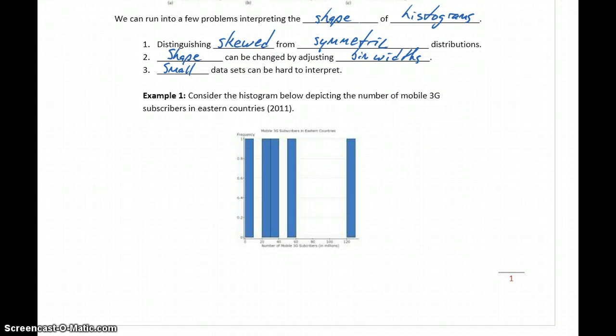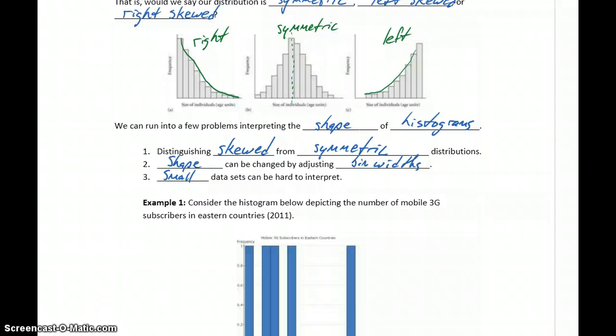What we don't see here, that we typically see with histograms, is sort of this staircase pattern, as that either decreases to the right, decreases to the left, or increases and then decreases again.